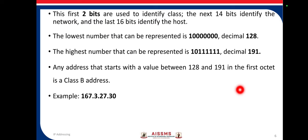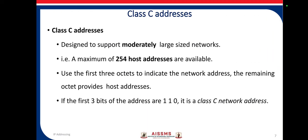An example class B address is 167.3.27.30. Class C addresses are designed to support moderately large networks, with a maximum of 254 host addresses available. It uses the first three octets to indicate the network address and the remaining octet provides the host address.